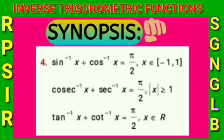Fourth point: sin⁻¹(x) + cos⁻¹(x) = π/2. Cosec⁻¹(x) + sec⁻¹(x) = π/2. Tan⁻¹(x) + cot⁻¹(x) = π/2.